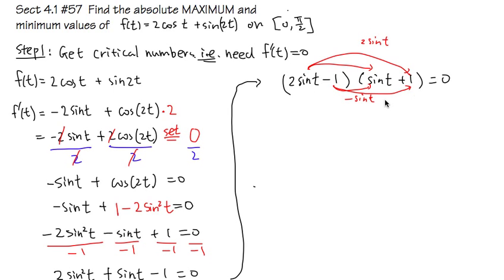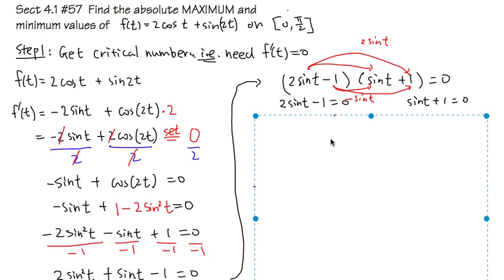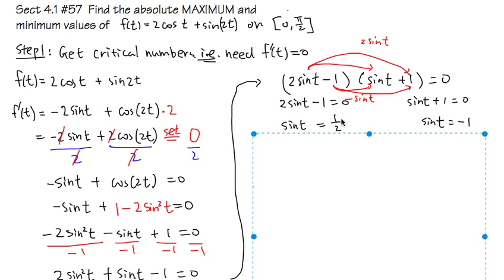Setting each factor equal to zero: the first factor gives 2sin(t) - 1 = 0, so sin(t) = 1/2. The second factor gives sin(t) + 1 = 0, so sin(t) = -1.